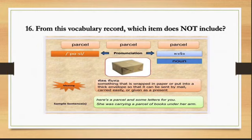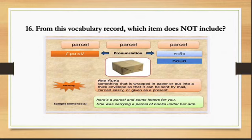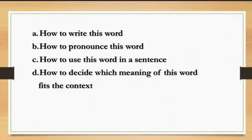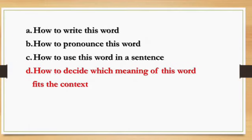Number 16. From this vocabulary record, which item does not include? A. How to write this word. B. How to pronounce this word. C. How to use this word in a sentence. D. How to decide which meaning of this word fits the context. The correct answer is D — how to decide which meaning fits the context is not included in the vocabulary record shown.